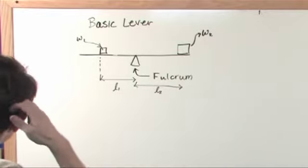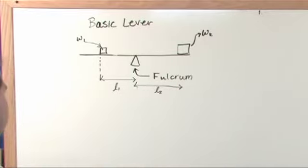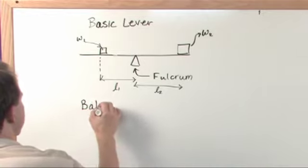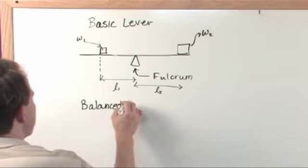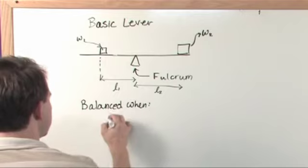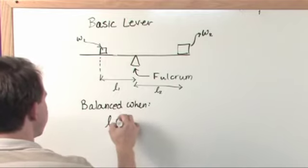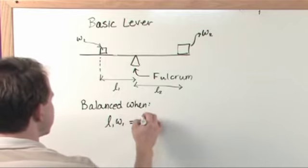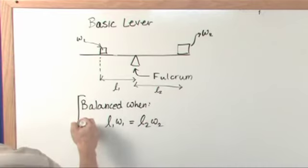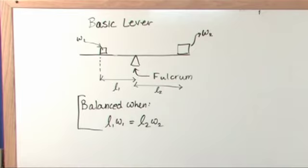Now, here's where the magic comes and really it's physics that comes in here. This seesaw is balanced when the following is true. The distance one times the weight one is equal to the distance two times the weight two. This seesaw is balanced in that condition.